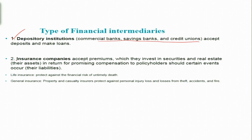Insurance companies are another type of financial intermediary. They accept premiums which they invest in securities and real estate in return for promising compensation to policyholders should certain events occur. Broadly, insurance companies can be put into two types: life insurance companies, which protect against the financial risk of untimely death, and general insurance companies, which protect against property and casualty losses from personal injury, accidents, and fire.